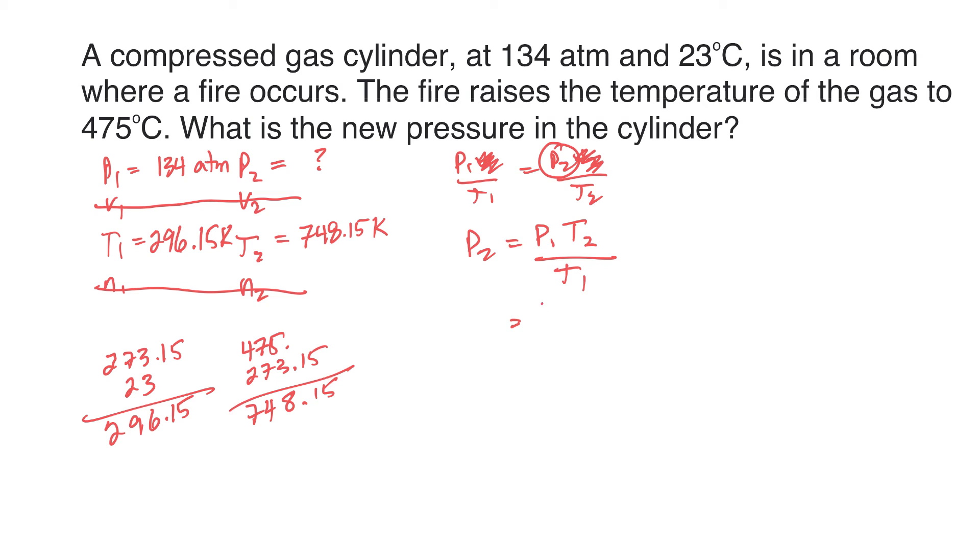P1, 134 atmospheres. Notice that I don't have to change, in this question I don't have to change my atmospheres. Unless in the question they say what is the new pressure in kilopascals or something, but I can use atmospheres here. It's just my answer is going to be in atmospheres, which is fine. If they don't say they need a specific unit, you can keep atmospheres. Temperature 2, 748.15 Kelvin, temperature 1, 296.15 Kelvin. The Kelvins cancel.